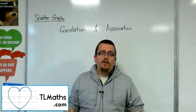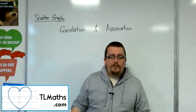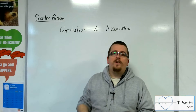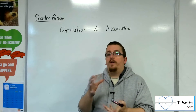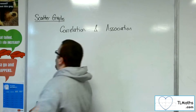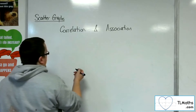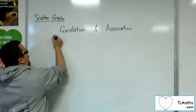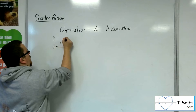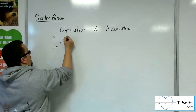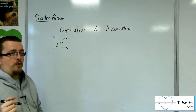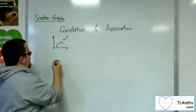So from GCSE, when you looked at scatter graphs, you should be quite proficient and knowledgeable about the idea of correlation. So what you'll have met is a positive correlation, which I'm sure you know something looks like this, for example — that's positive correlation going from the bottom left to the top right.